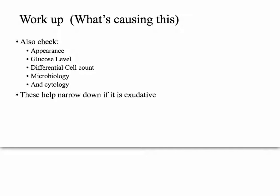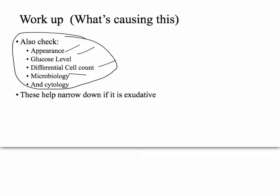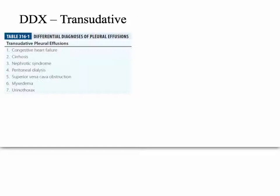Once you've classified it, the second step in the workup is if it's exudative, you want to go ahead and do additional testing. Just keep doing all things — what does it look like, what's the glucose level, get the differential cell count, microbiology, and cytology. You're doing this because you're looking for local problems in the vasculature — something is wrong with the filtration of the cells, and you need to know more about that.